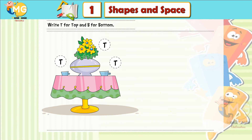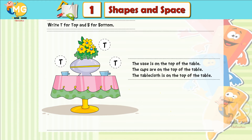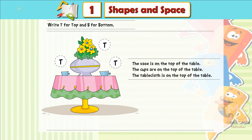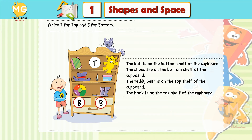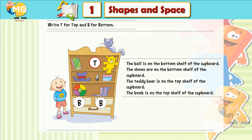And B for bottom. The vase is on the top of the table. The cups are on the top of the table. The tablecloth is on the top of the table. The ball is on the bottom shelf of the cupboard. The shoes are on the bottom shelf of the cupboard. The teddy bear is on the top shelf of the cupboard.